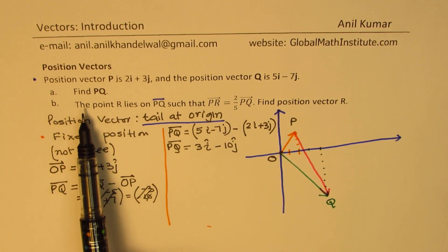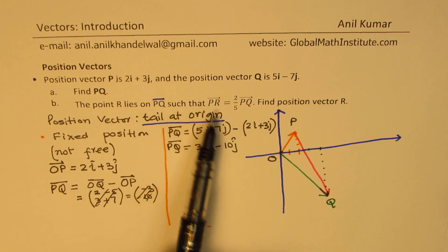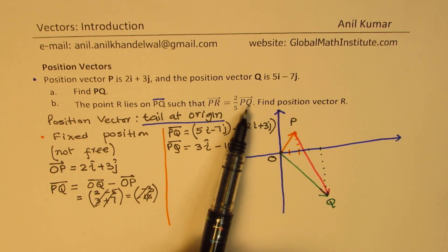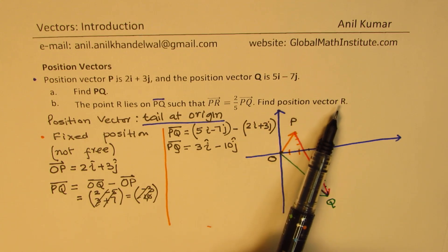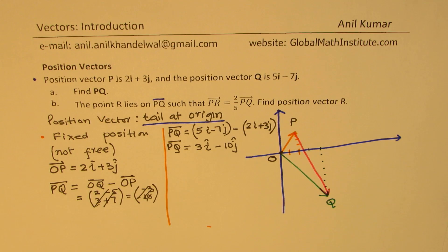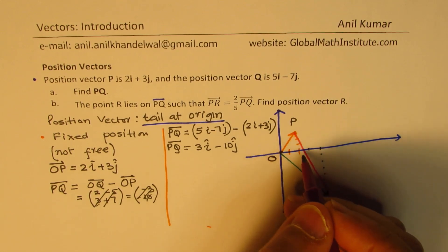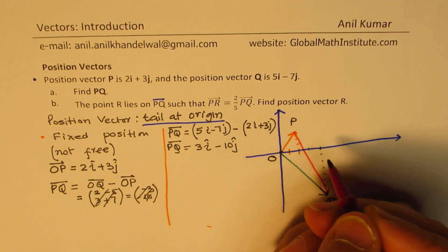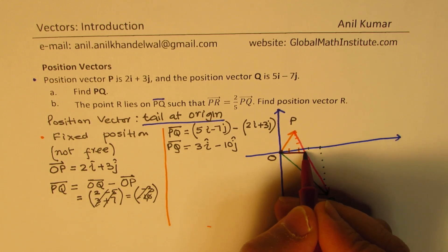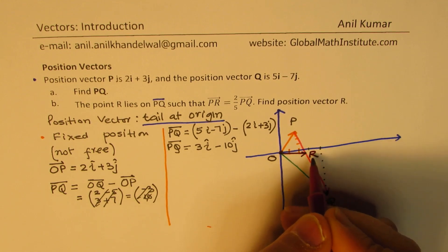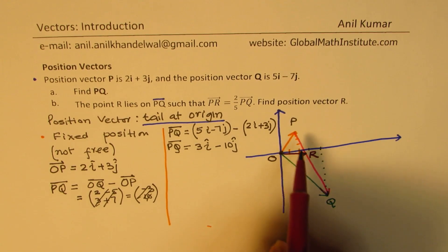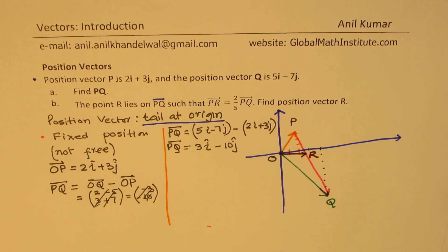Now we are given that the point R lies on PQ such that P to R is two-fifths of PQ. Find the position vector R. So point R lies on PQ. Two-fifths means we divide this into 5 equal parts, maybe somewhere here. Maybe this is point R for us. We'll work it out. So that divides in the ratio of, when you divide equal in 5 equal parts, this is 2 parts. That is the point R. We need to find the position vector R. How do we get it now?